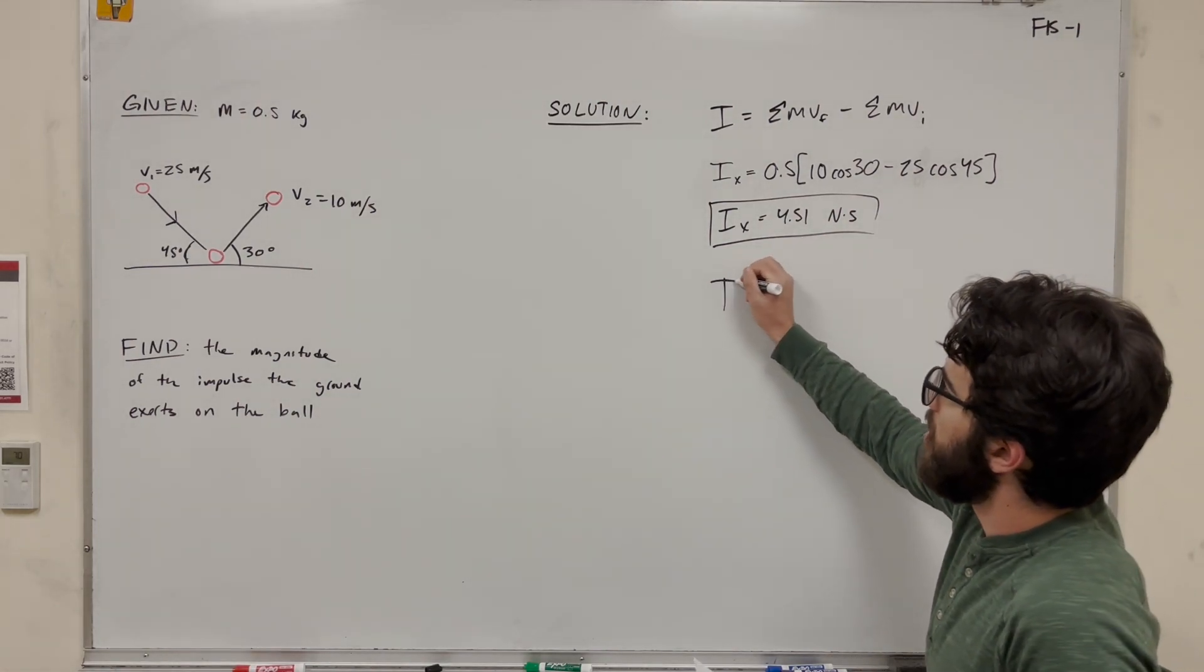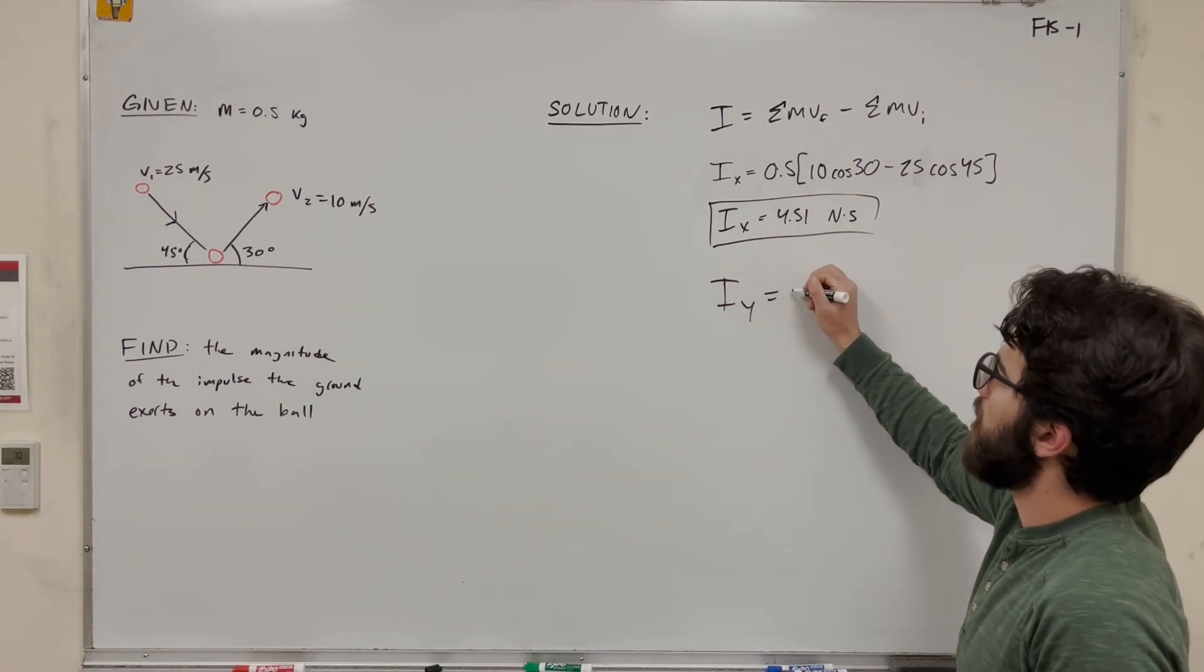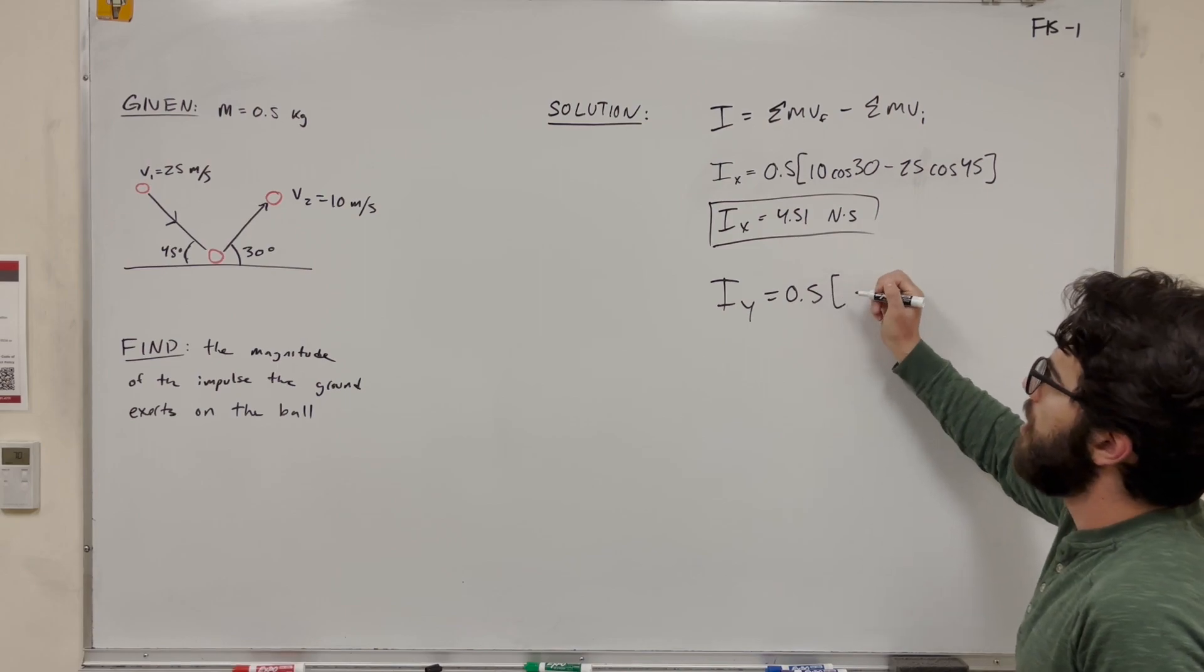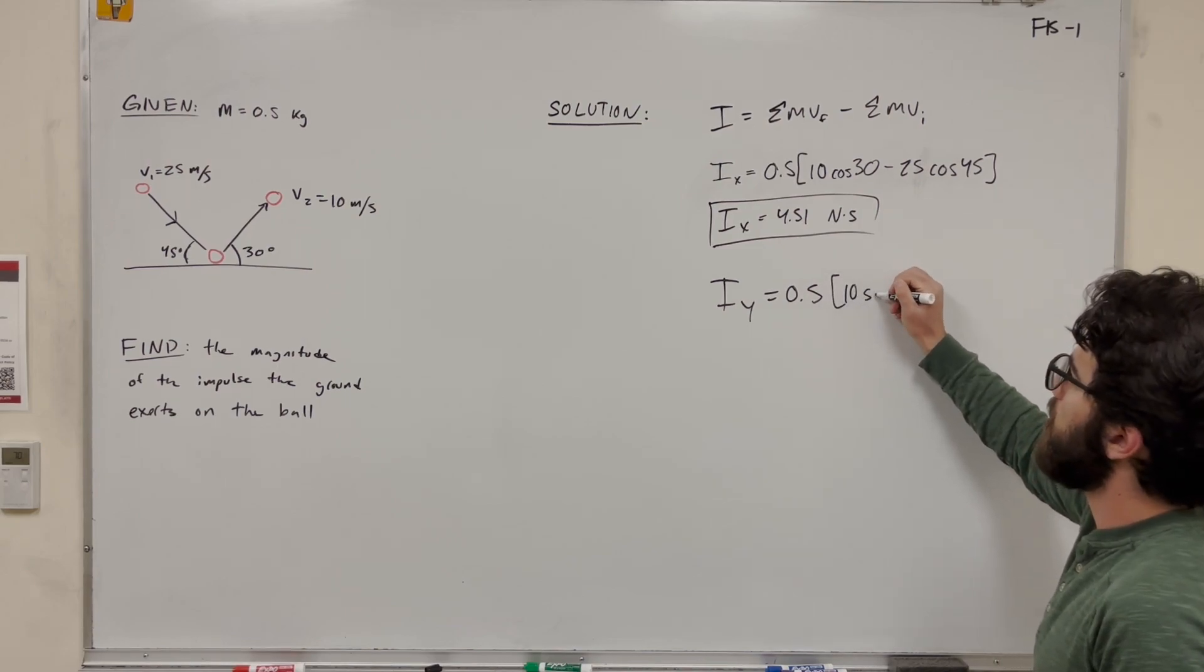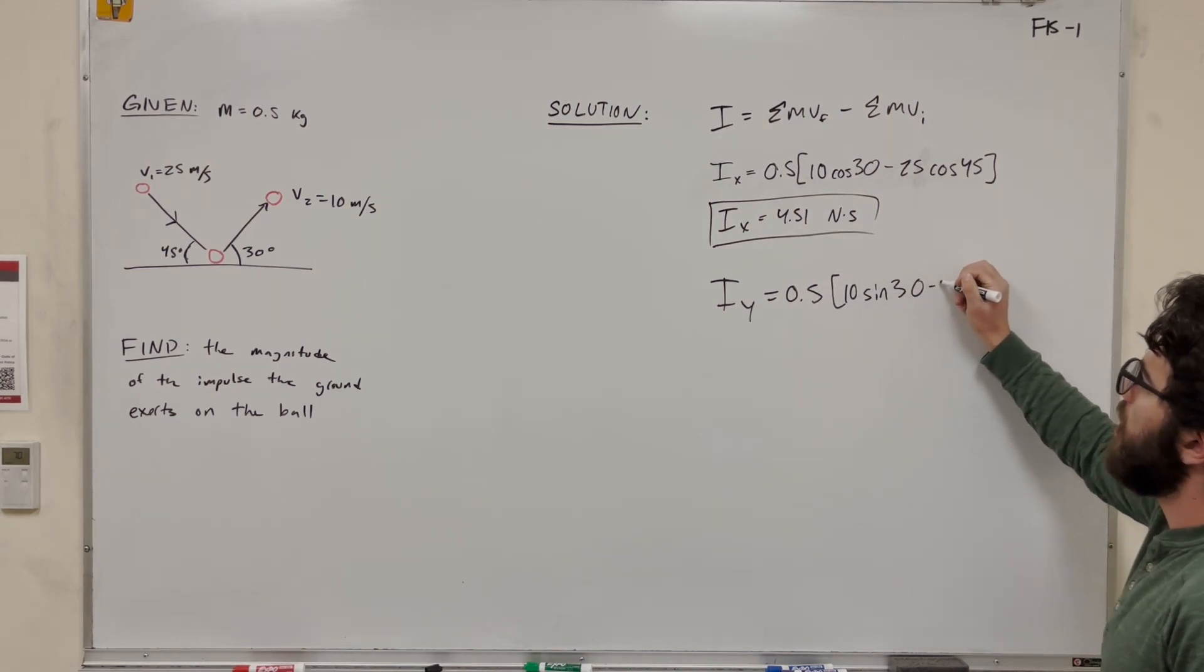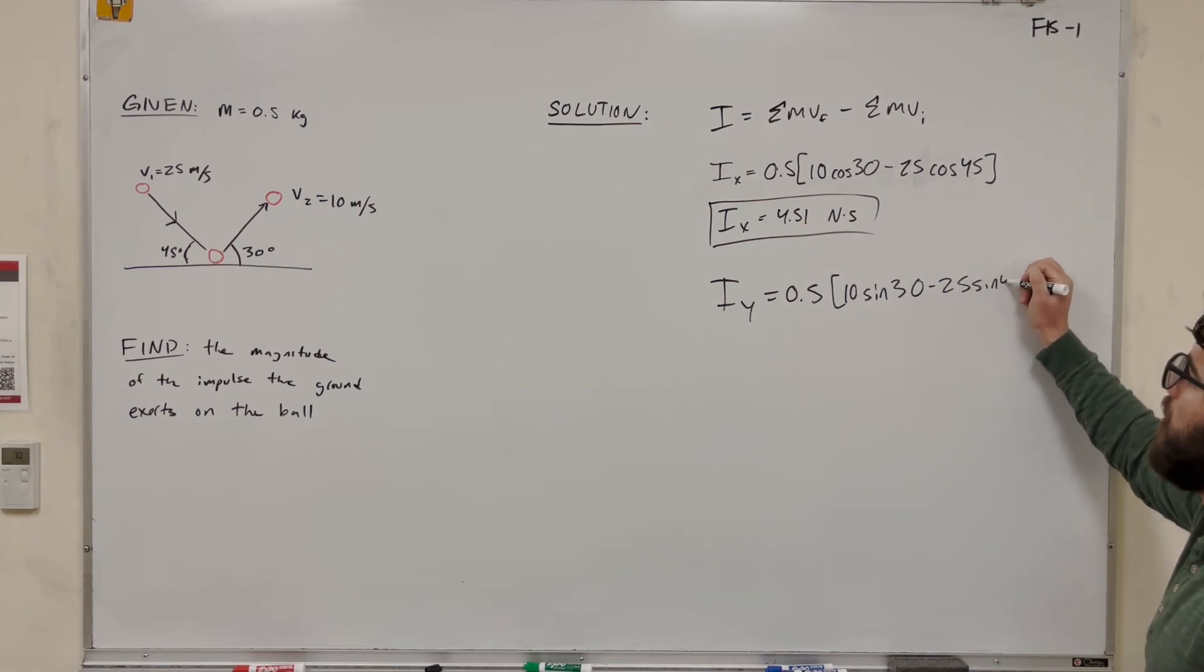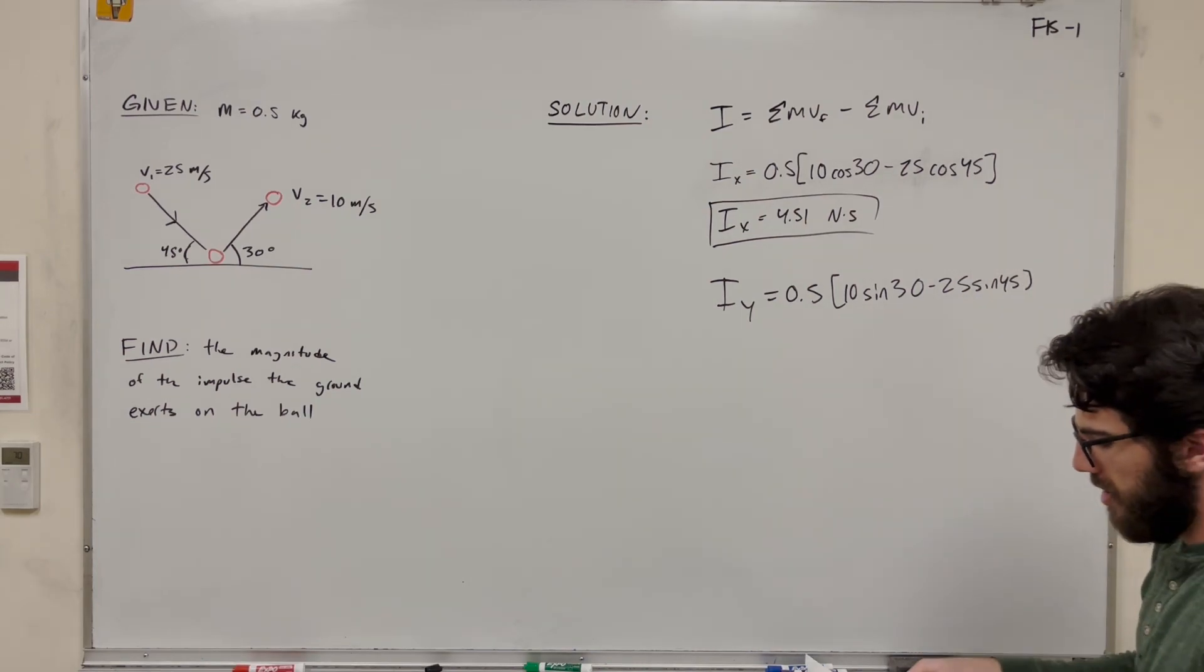This is going to be very similar. The impulse in the y direction is going to be the mass factored out. Now it's going to be 10, but instead of cosine it's going to be sine of 30 and then minus 25 sine of 45.